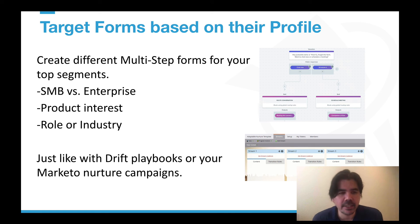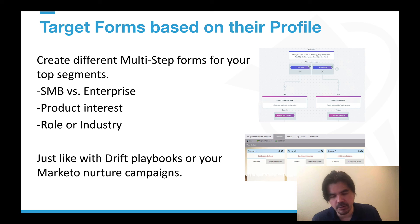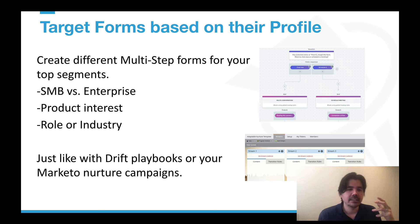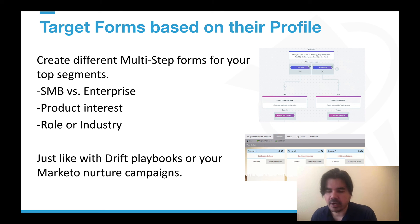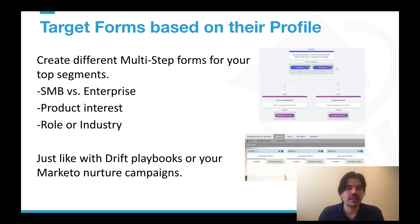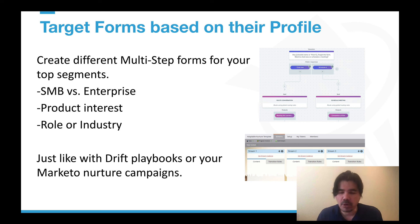Lastly, over time this will become its own strategy. Much like you have different nurture sequences in Marketo or different Drift playbooks, you'll recognize that you have certain key target accounts, segments, and ICPs that you'll want to route through different form experiences. Rather than having one interactive form for everyone, you may eventually end up with different forms for your top segments and groups. I don't recommend doing this day one, but as you evolve the strategy and see what works, you'll see natural segments that perform better or may need more guidance. This is going to further enhance your personalization and ABM programs by targeting based on those same attributes you care about.